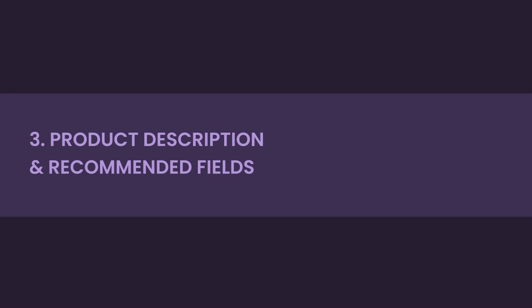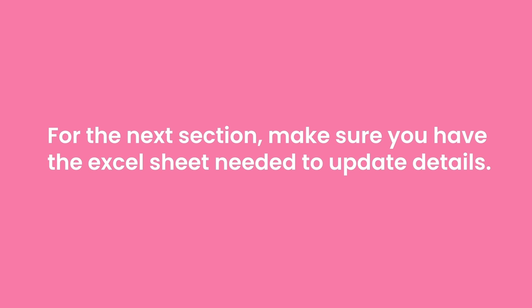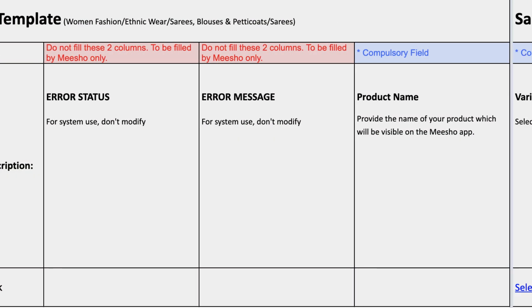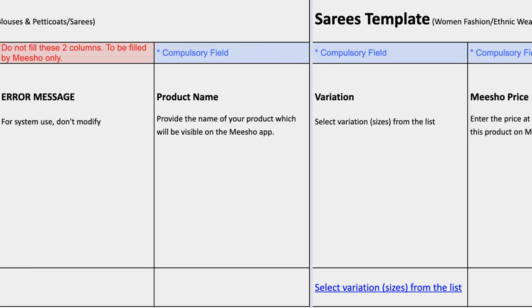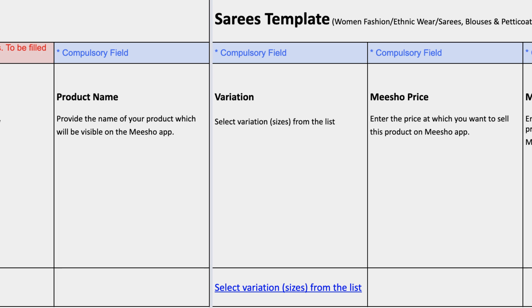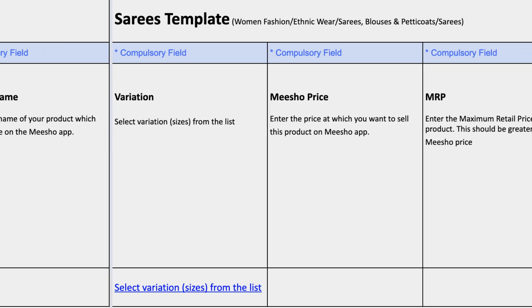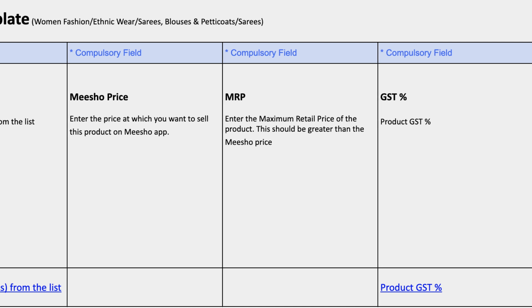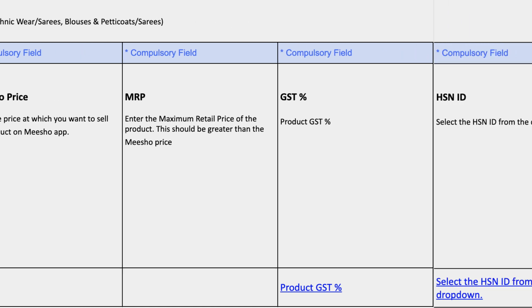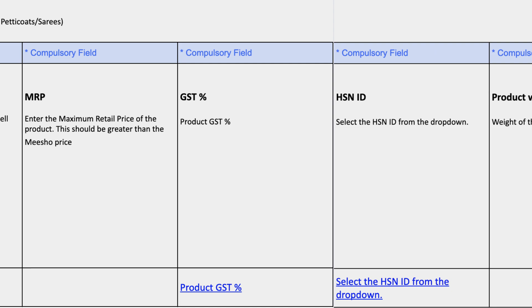Number three: Product description and recommended fields. All the product description fields that are optional contain important information that the user refers to in order to make an informed decision before making a purchase. Make sure that you enter correct and complete information in these fields. We highly recommend you mention the key USP of your product in the product name to make it more relevant for the customers.